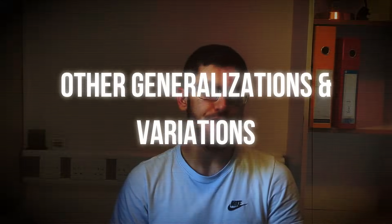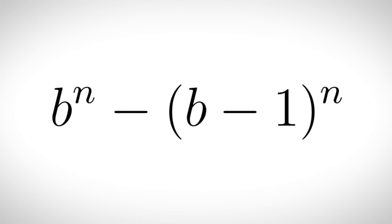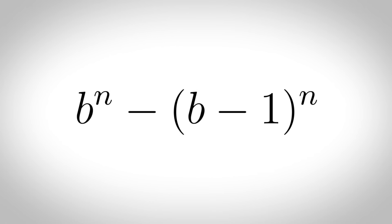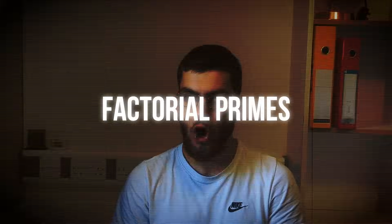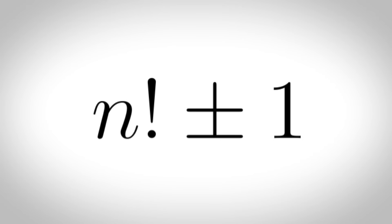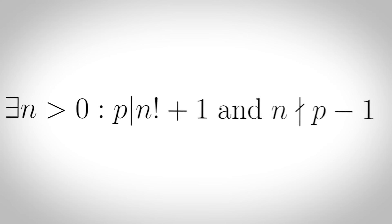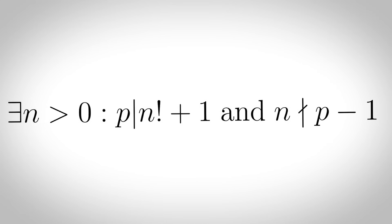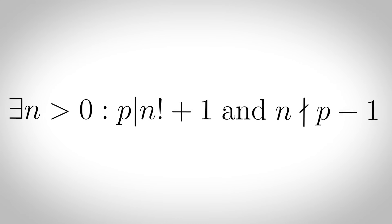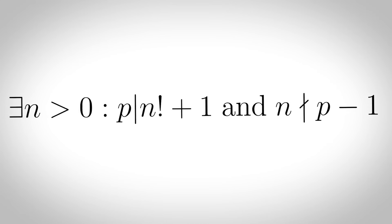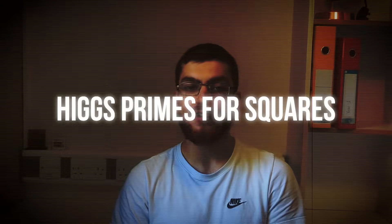Other generalizations and variations: many generalizations of Mersenne primes have been defined, such as primes of the form b to the n minus b minus 1. Factorial primes: primes of the form n factorial plus or minus 1. Pillai primes: primes p for which there exists n greater than 1 such that p divides n factorial plus 1 and n does not divide p minus 1.